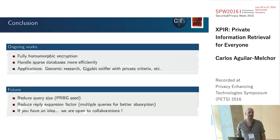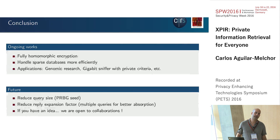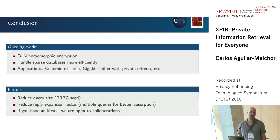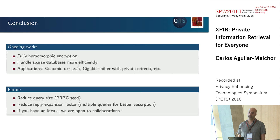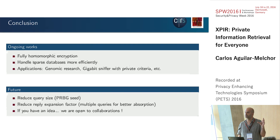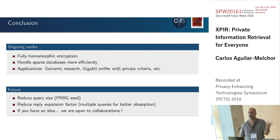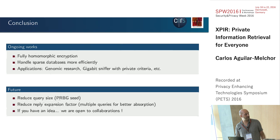We are integrating fully homomorphic encryption into Xpire, better handling of sparse databases, and using it for genomic research applications. We are also building a sniffer that, when discovered, hides what it was sniffing — to show that PIR can be quite dangerous too. We are working on several improvements, and if you have ideas for applications, we are open to collaboration. Thank you.